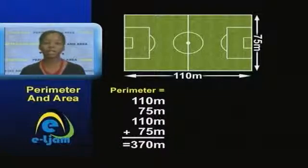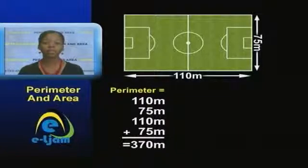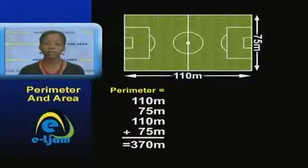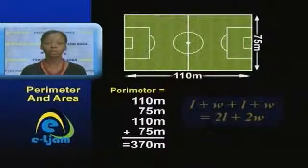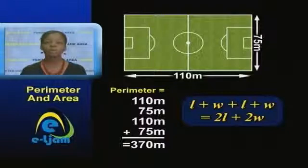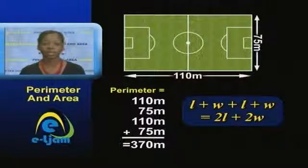Since the rectangle has two pairs of equal sides, represented by the length and the width, if we were to derive a formula based on the calculations, the perimeter would be equal to L plus W plus L plus W, which is the same as 2L plus 2W.